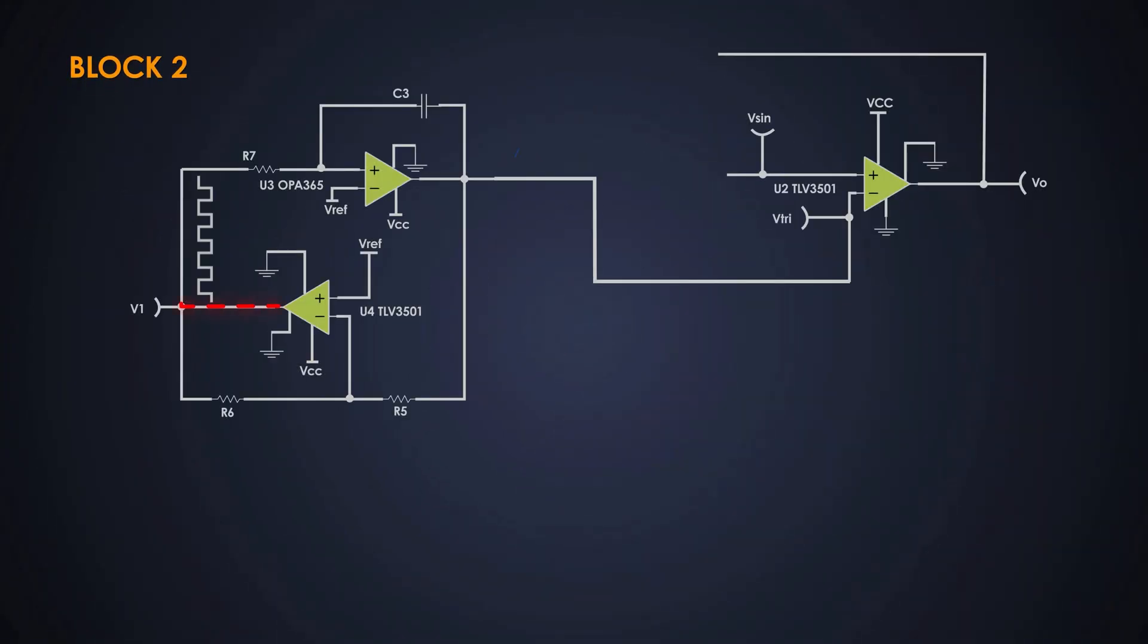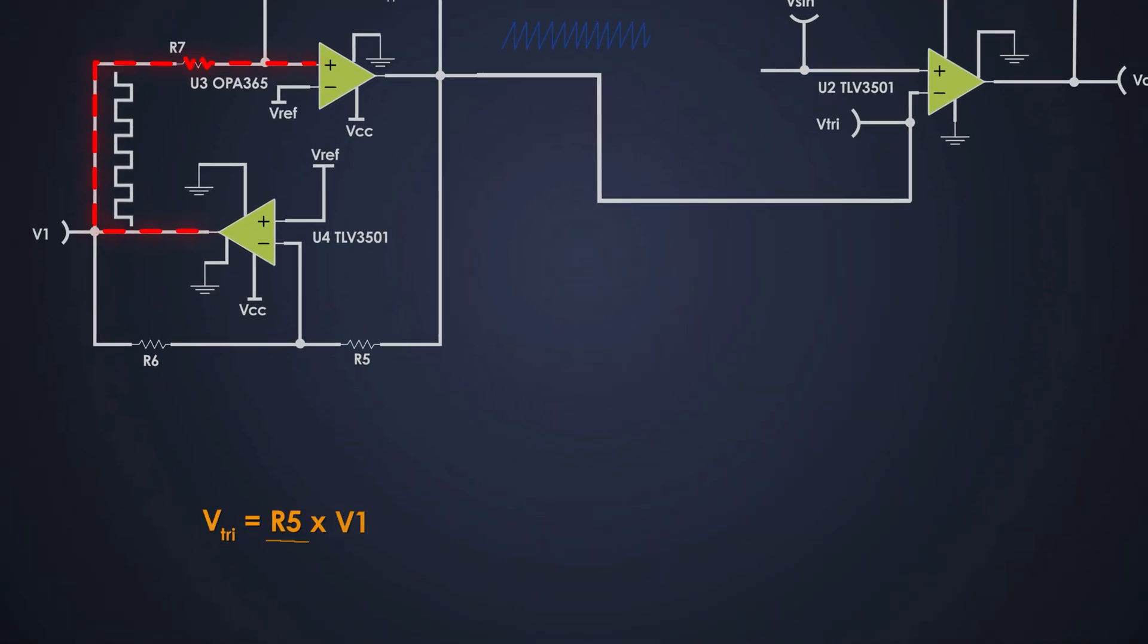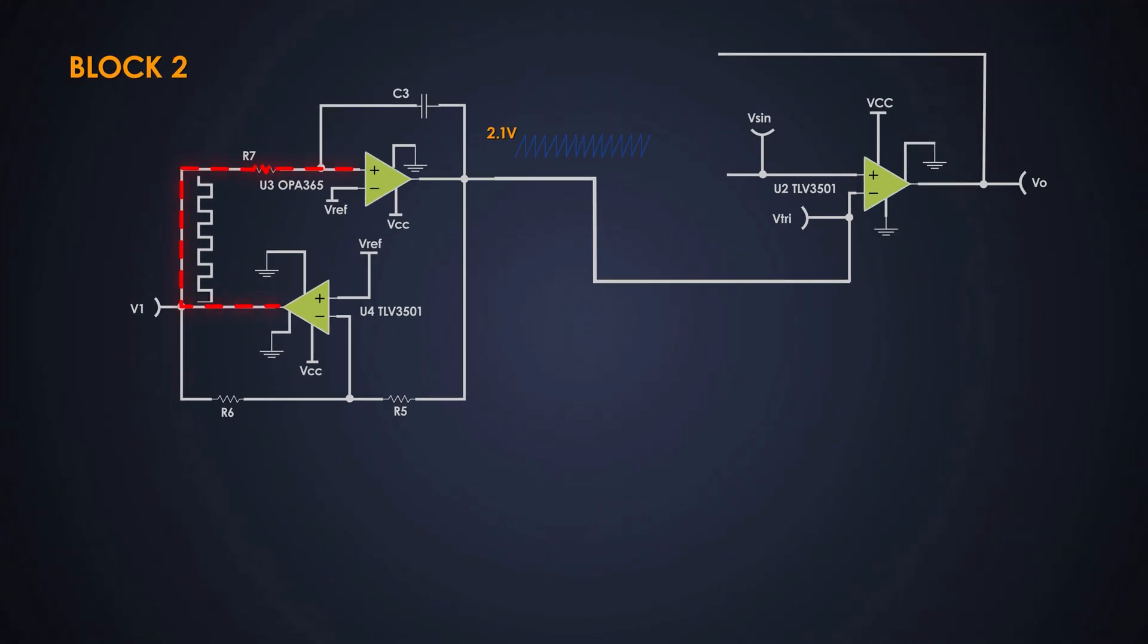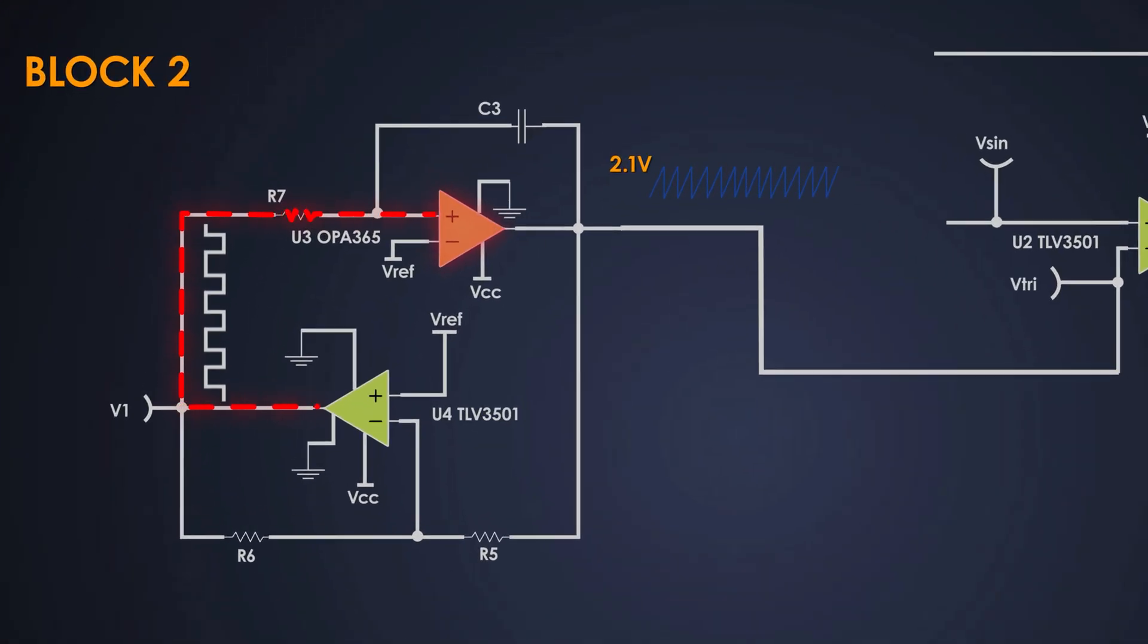This block continuously creates a triangular wave with a peak-to-peak voltage of around 2.1 volts and a frequency of approximately 500 kHz.